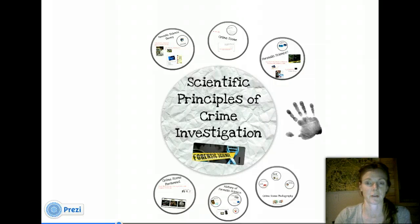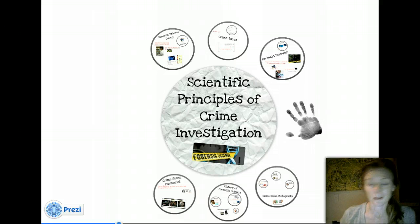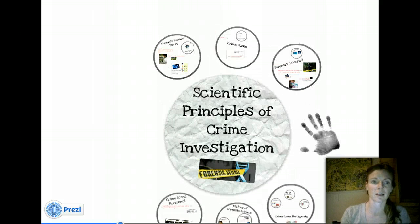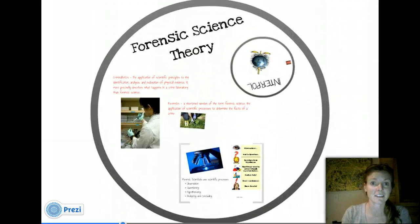Okay, another mini lesson here for you. As you guys remember last time, if you watched the mini lesson, we talked a little bit about what is forensic science, kind of some of that basic background knowledge. So we're going to get into a little bit more of the scientific principles of crime investigation, and this time we're going to talk a little bit about forensic science theory.